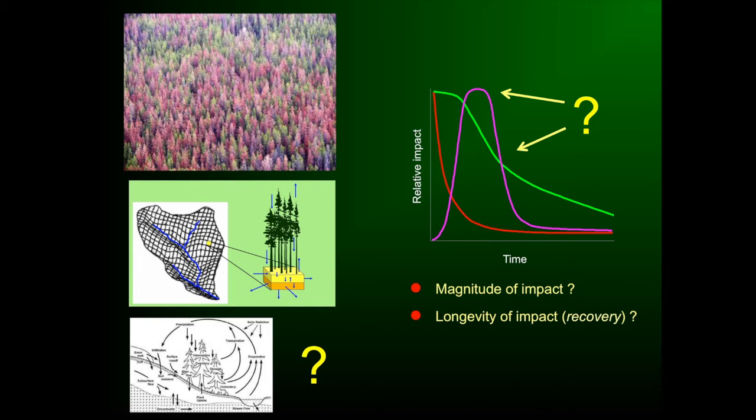These diagrams and cartoons are just meant to illustrate that a lot of what governs the hydrology of these landscapes depends on the interaction of climate and those processes with the vegetation. So the vegetation really drives that, and to understand what's happening at the catchment scale, we need to focus our attention on the stand scale, because this is how mountain pine beetle exerts its impact on the landscape.